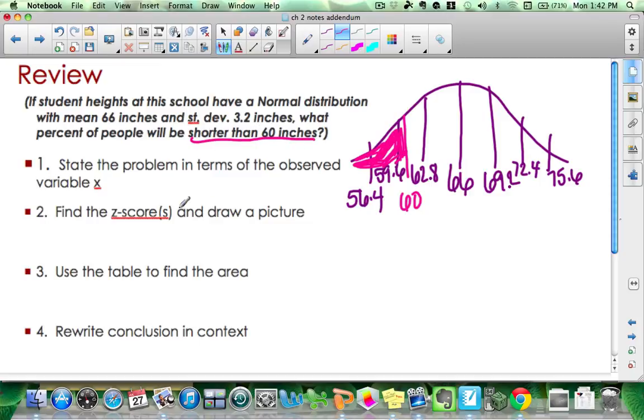Shorter than 60 inches means I just have one z-score to find. So z is going to be 60 minus the mean, divided by the standard deviation. And that gives me negative 1.875, which I need to either call negative 1.87 or negative 1.88. I do not care which one you do.